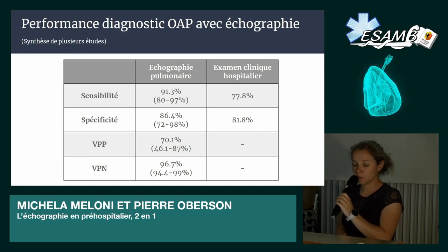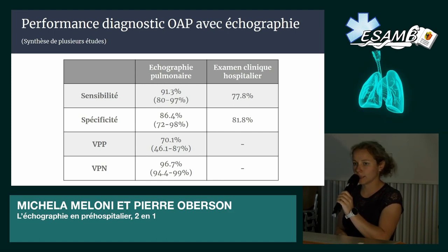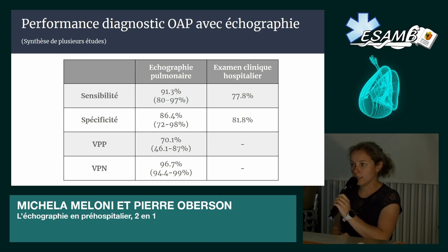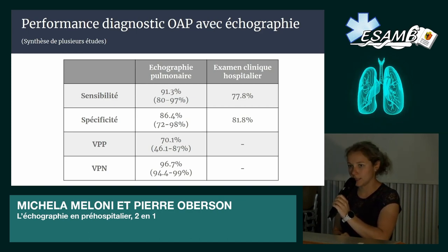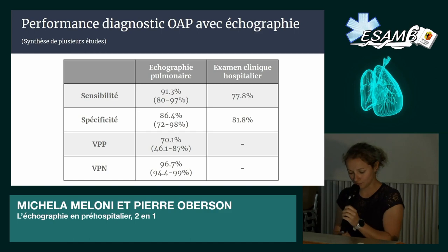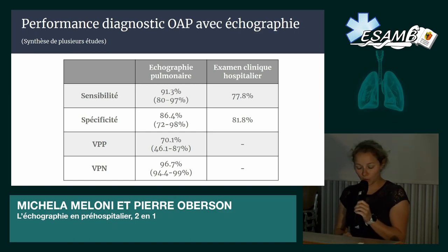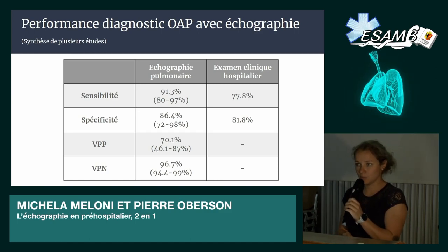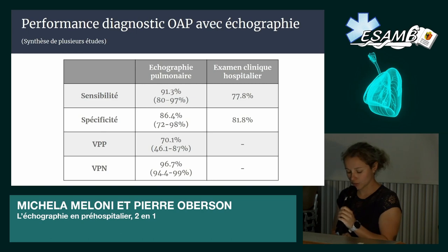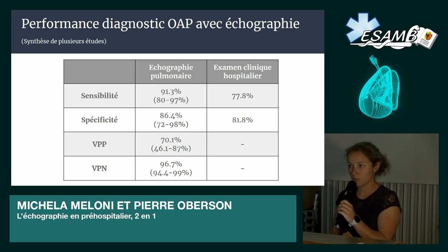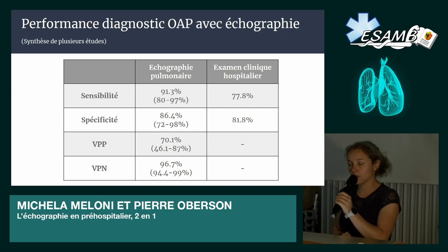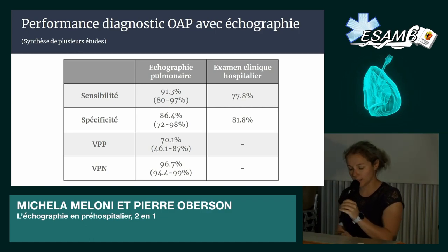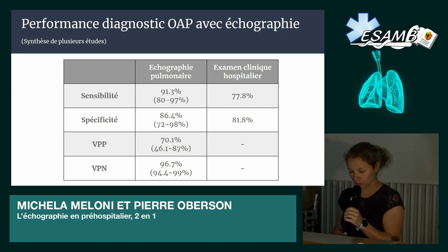La marge d'erreur peut être due au fait qu'il y a d'autres pathologies qui peuvent créer le même profil à l'échographie — le profil B+. On peut penser à la pneumonie, dont le caractère sera plutôt localisé au niveau des foyers pulmonaires. Il y a aussi des maladies interstitielles qui peuvent laisser des lignes B résiduelles. Finalement, on voit que le profil B à l'échographie est assez sensible et spécifique pour diagnostiquer les OAP. L'absence d'un profil B+ rend le diagnostic d'OAP très peu probable, avec une valeur prédictive négative de 96,7%.